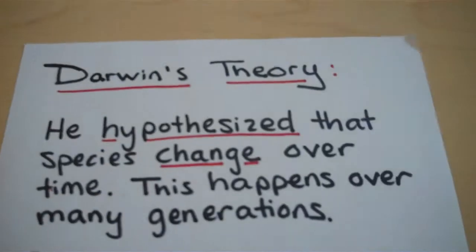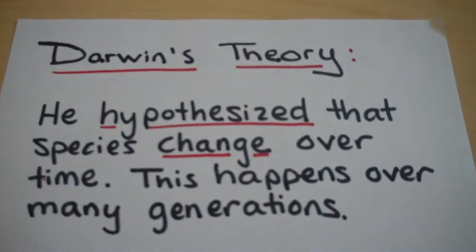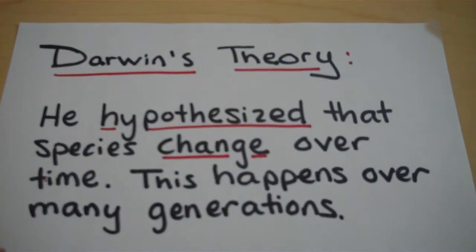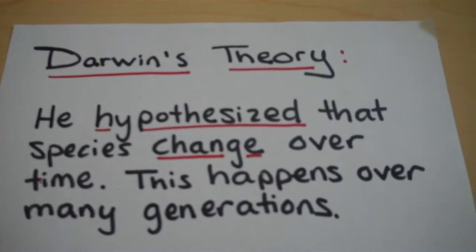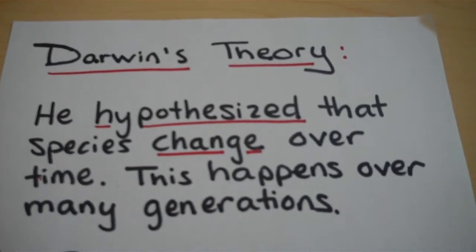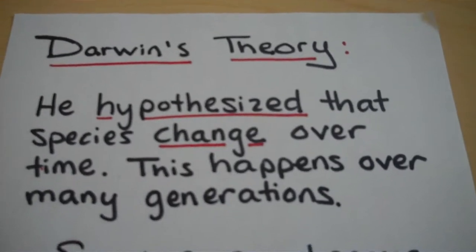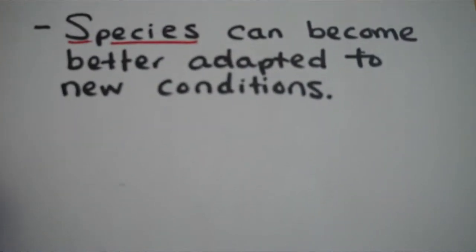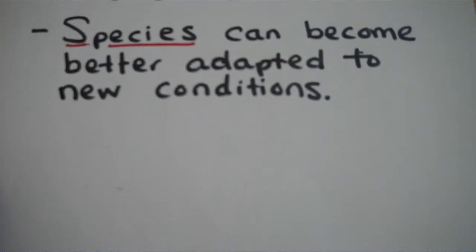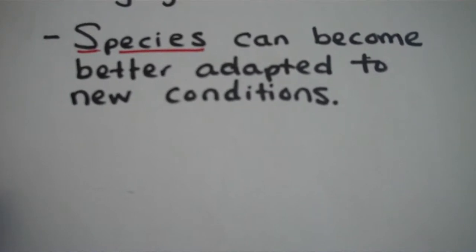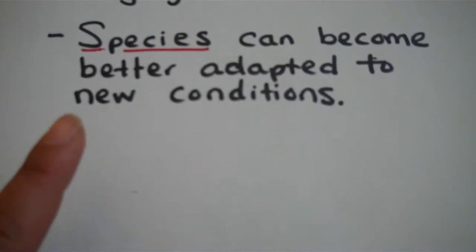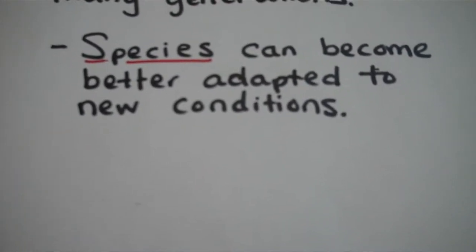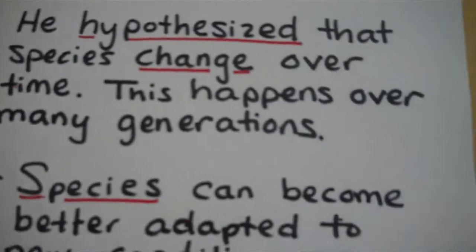One of the scientists who studied evolution was Darwin. He hypothesized that species change over time, and this happens over many generations. One important thing to note about a species is they can become better adapted to new conditions, and species can mate and make another generation.